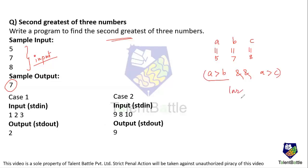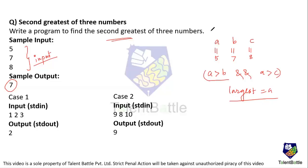This condition identifies the largest value as a. But since we are identifying the second greatest number, we need to work on b and c as well. We have to separately check conditions for b and c using nested if-else conditions to identify the second largest number. After writing the logic, we must also satisfy all provided test cases.